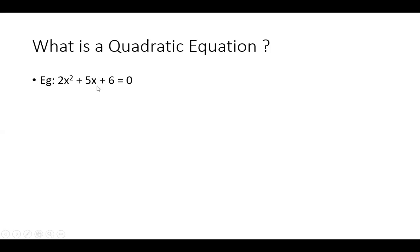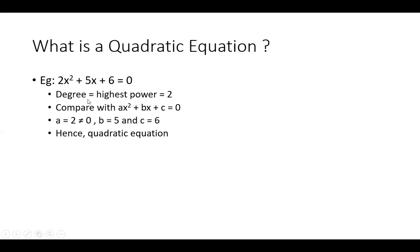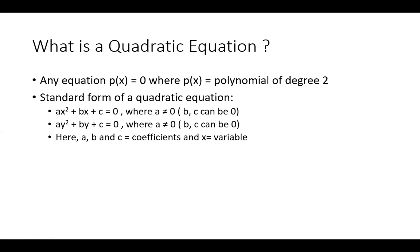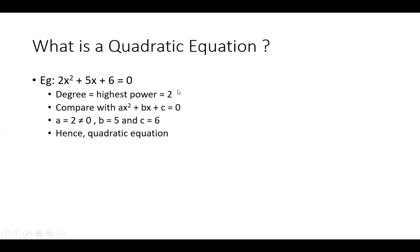Here is a numerical example of a quadratic equation: 2x² + 5x + 6 = 0. Here the highest power of x is 2. Comparing with ax² + bx + c = 0, the value of a is 2, which is not 0. Therefore it is a quadratic equation. A value is 2, b value is 5, and c value is 6.